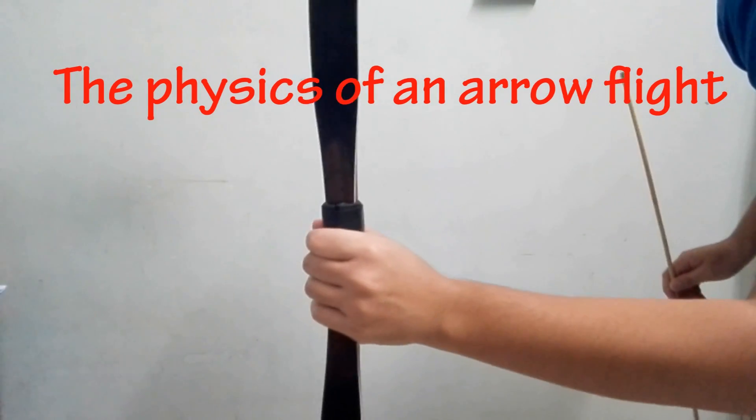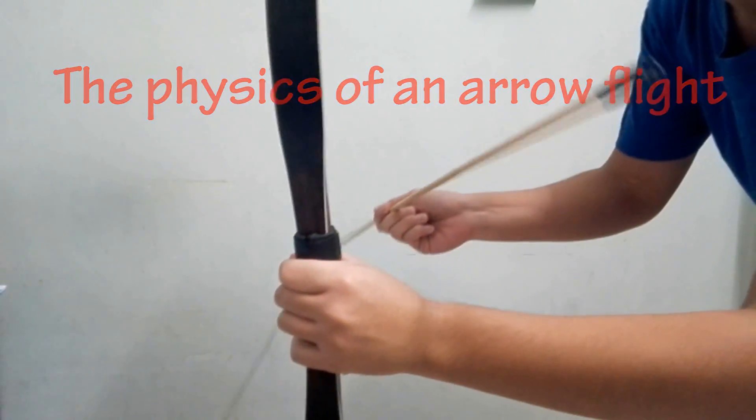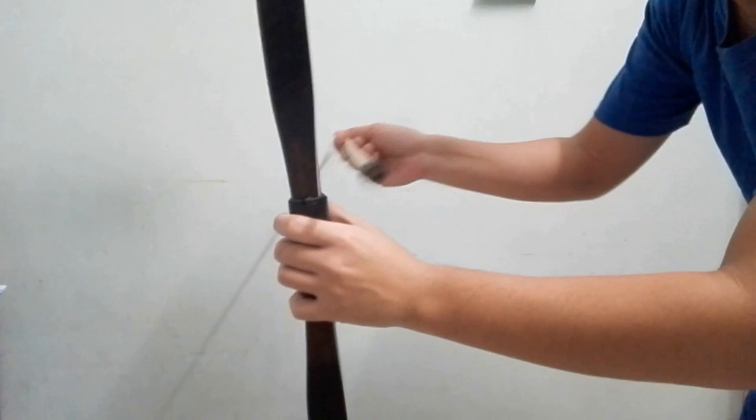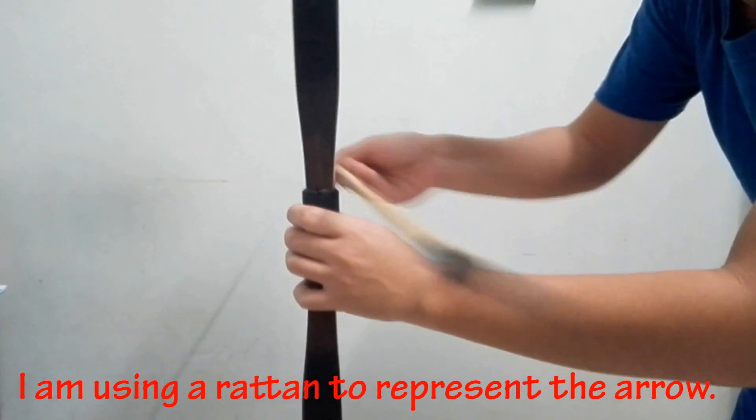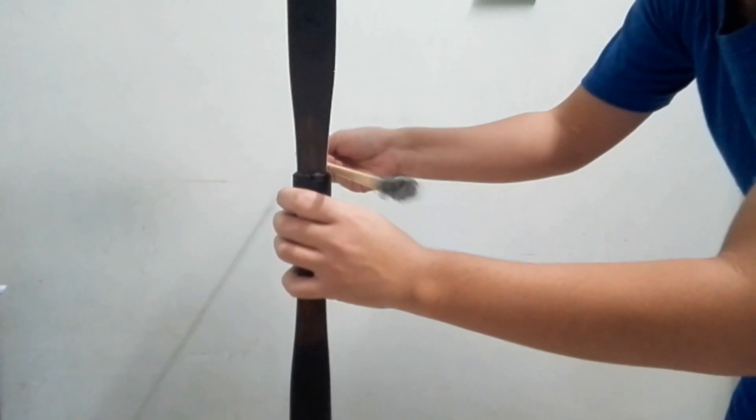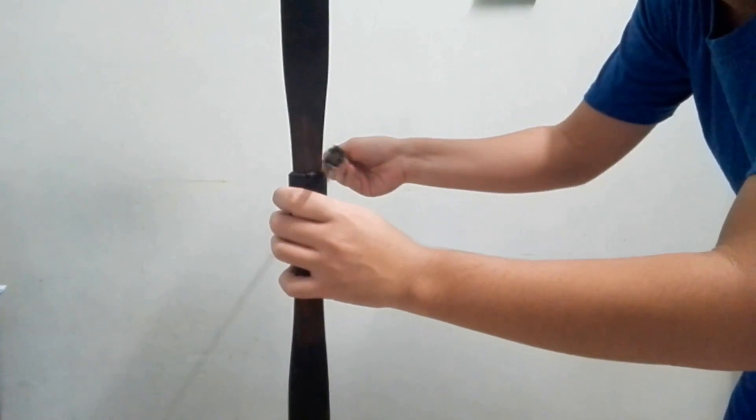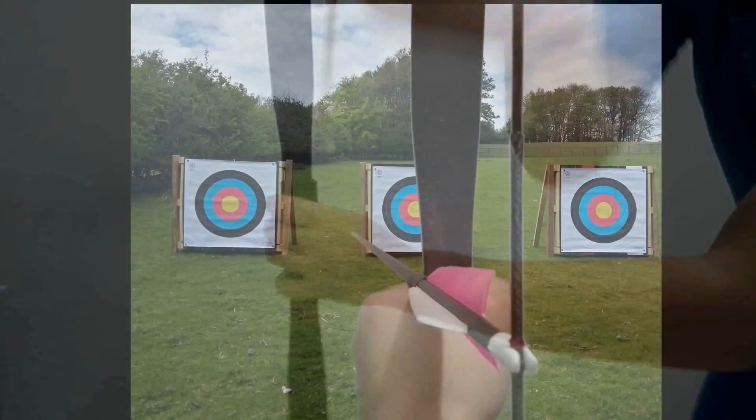Now let's discuss the physics of an arrow flight. This is a horse bow or a self bow without a shelf. The arrow is pointing to the side. But how is it going to fly straight towards the target in front of the bow itself instead of flying to the side?